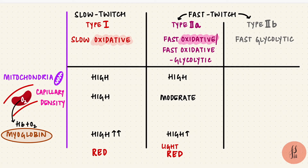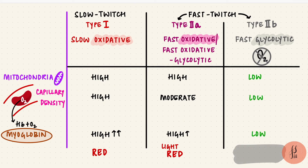What about the type 2b fibers? They use anaerobic metabolism — they don't need oxygen — so they have fewer mitochondria, a less dense capillary network, and less myoglobin. So instead of red, these are white fibers.